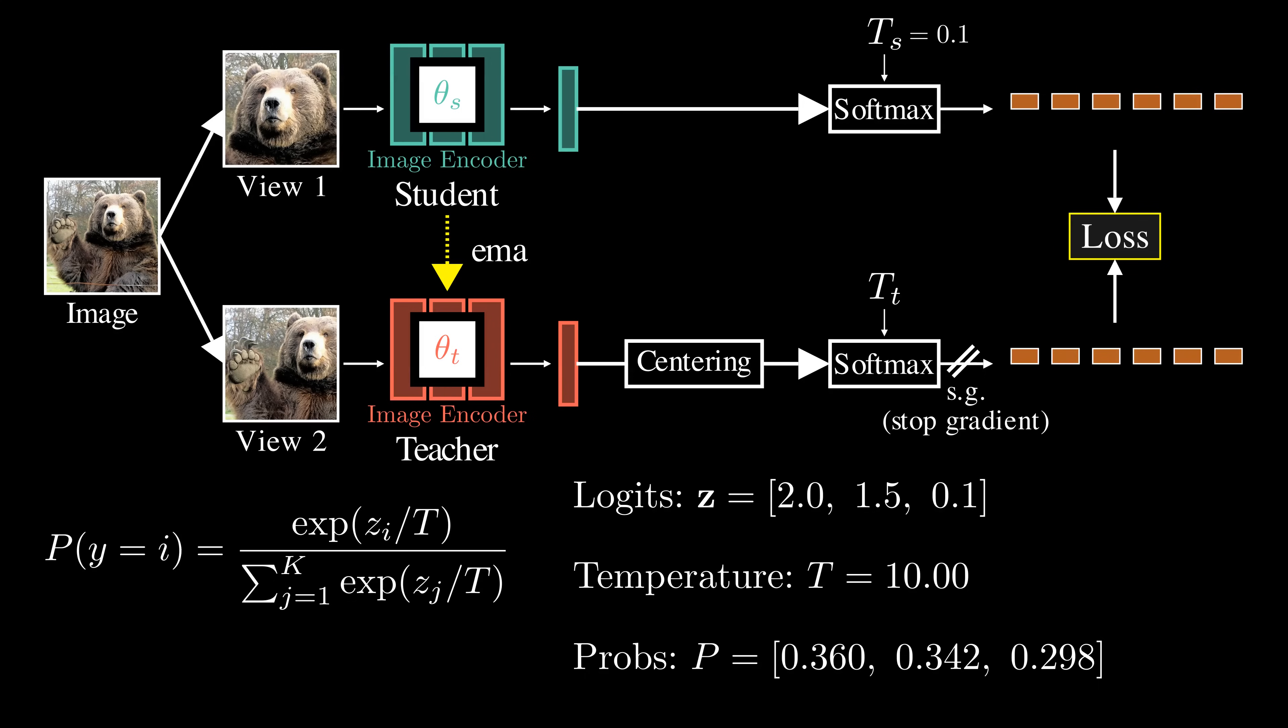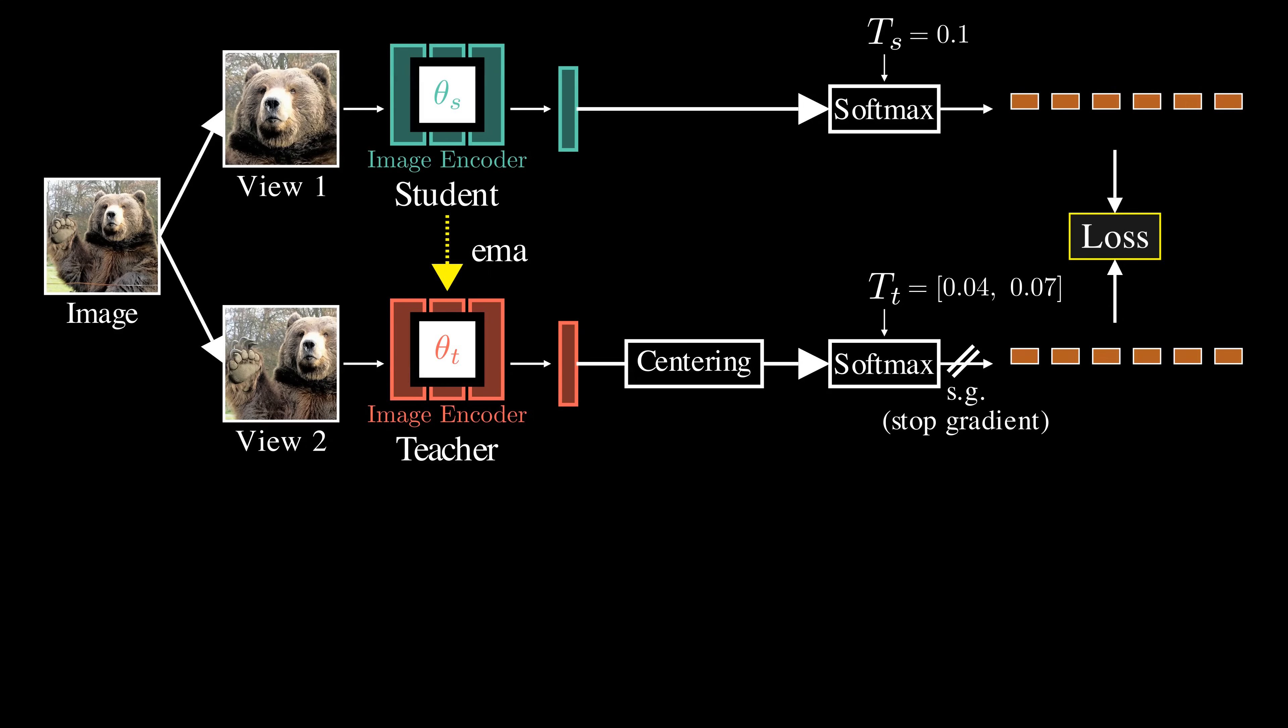In practice, we set the student's temperature to be a fixed value of 0.1. For the teacher, we begin with a lower temperature and gradually raise it to a higher value using a linear warm-up schedule throughout training. Due to the temperature difference, the teacher's probability distribution is sharper than the student's. This means the teacher's predictions are more confident, with higher probability mass on the most likely class. This provides a strong signal for the student, encouraging it to match the teacher's confident predictions.